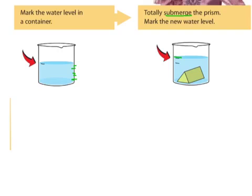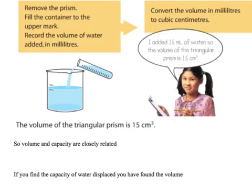Now if you're using a cylinder that has measurements on the side, what you would do is you would subtract these two measurements, your new measurement and your old measurement, and that difference would tell you the volume.